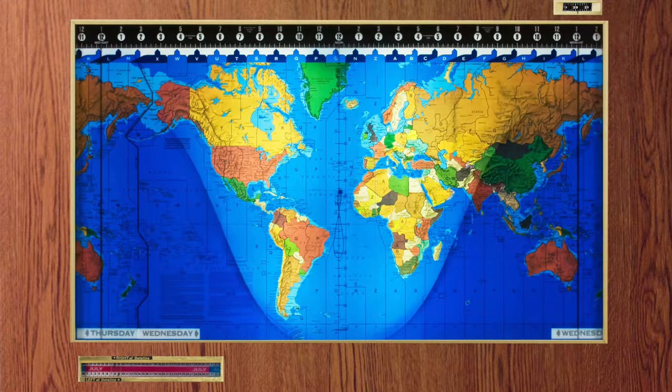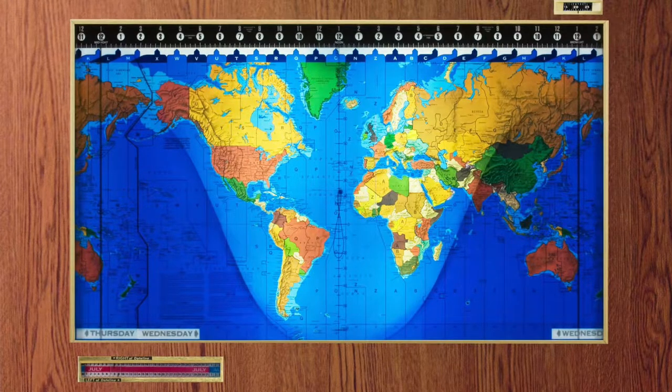This is the Geochron. It shows a map of the world and where the sun is shining.